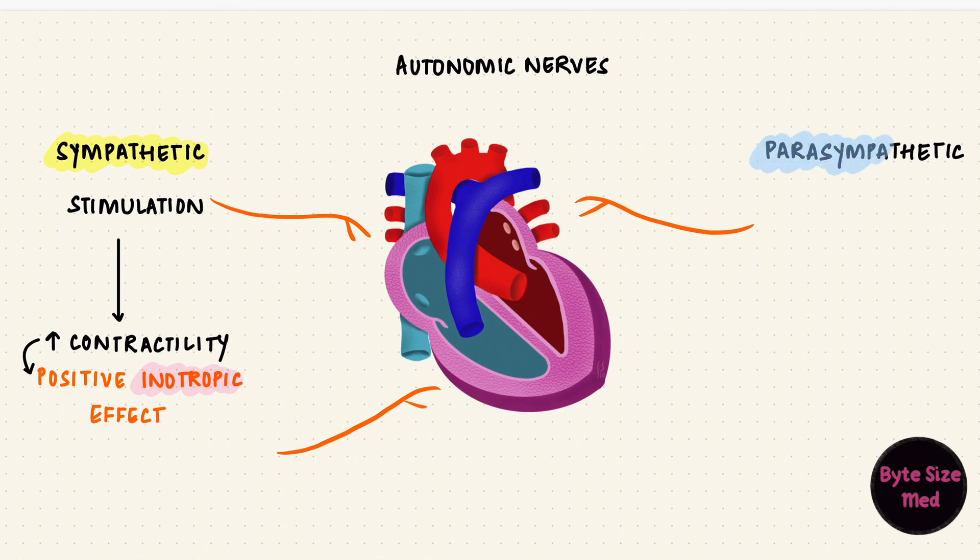The parasympathetic system has the opposite effect. It has a negative inotropic effect. It reduces contractility, more so in the atria than in the ventricles, because they innervate the atria more.